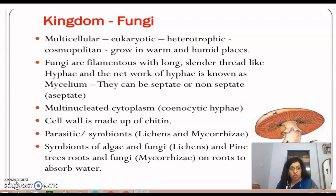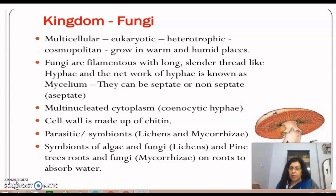Hyphae are long slender thread-like structures and their network is called mycelium. They can have cross walls between them. If they have cross walls, they are known as septate; if they do not have cross walls, they are known as non-septate or aseptate, and they have a multi-nucleated cytoplasm. These are key terms that could be asked in objective questions.